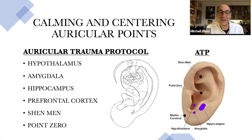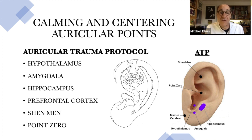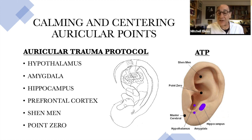The points are selected for their clear and understood neural dysfunction. The hypothalamus, which is overactive. The amygdala, which is overactive. The hippocampus, which is overactive. The prefrontal cortex, which is underactive. The shenmen, representative of the sympathetic nervous system. And point zero, representing the very center of the ear.